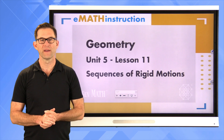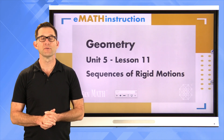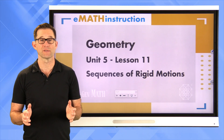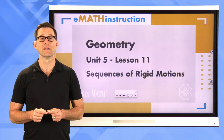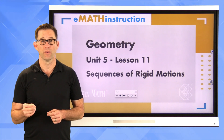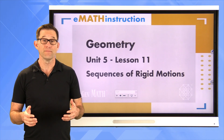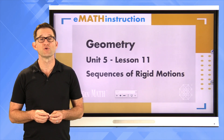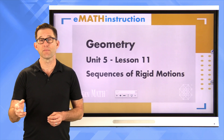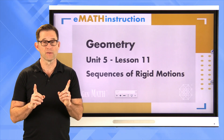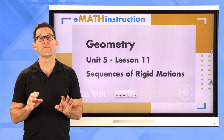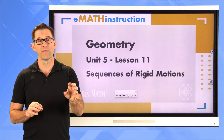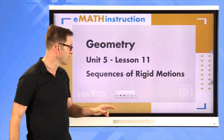Hello and welcome to another geometry lesson by E-Math Instruction. My name is Kirk Weiler and today we'll be doing Unit 5, Lesson 11 on Sequences of Rigid Motions. This is our final lesson in our Coordinate Geometry Unit. Today we're going to be looking at sequences of rigid motions — putting more than one rigid motion together to see where a geometric figure gets mapped, or, more challengingly, figuring out a sequence of rigid motions that would map one figure on top of another.